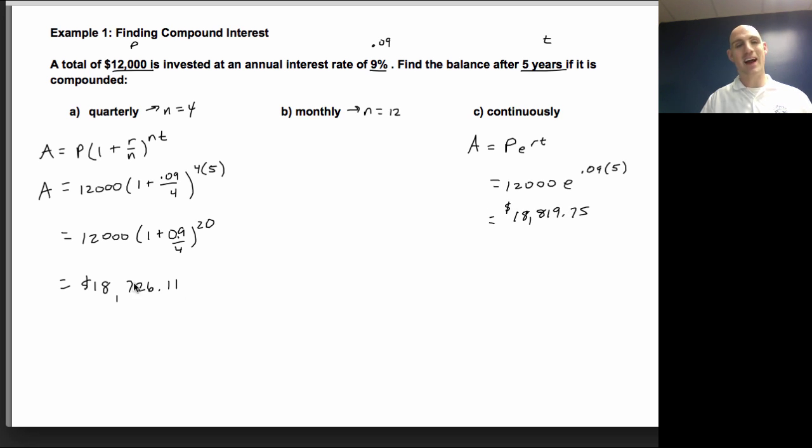And when I plug that into my calculator, I'm going to come out with $18,819.75. We can see that's decidedly more than over here when I had $18,726. Now you might say, well, decidedly it's not that much more. But think about that over the course of years, that adds up to a lot of money. And especially if we are investing more, we're going to end up with more in the end.